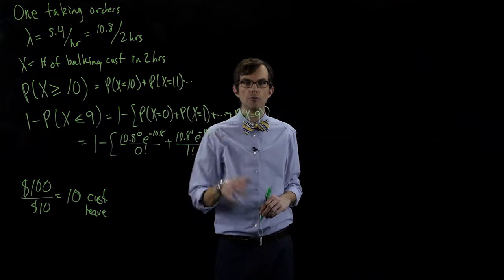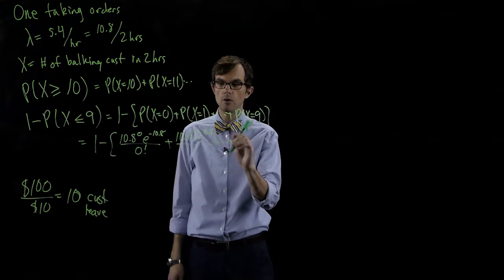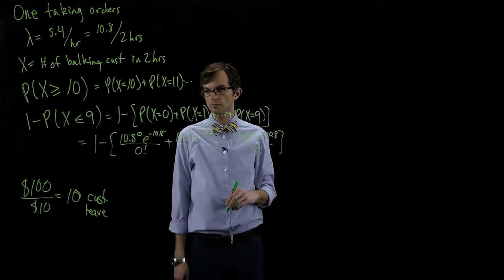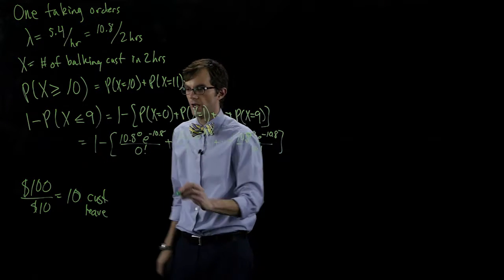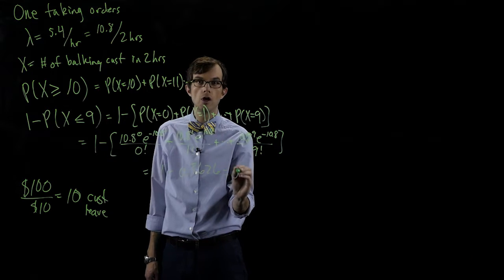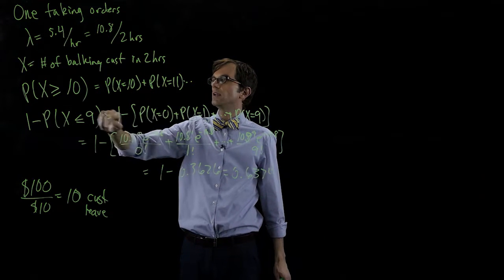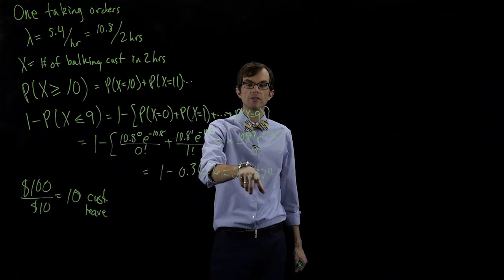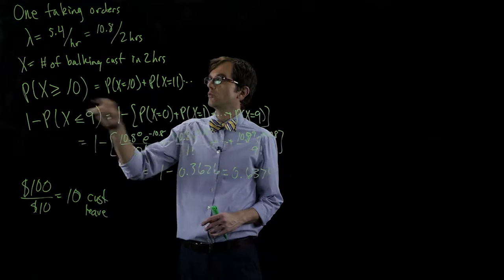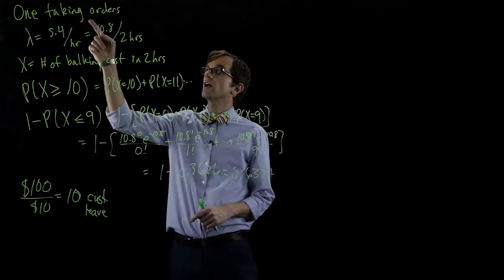We'll wave our hands at the arithmetic — you could work this out at home. The series ends with 10.8 to the nine times e to the minus 10.8 divided by nine factorial. Working all of that out, we get one minus 0.3626, which equals 0.6374. So if we have one person taking orders, the probability that ten or more people balk in the next two hours is 0.6374 — about sixty-four percent of the time we're going to lose more than a hundred dollars in revenue in two hours.